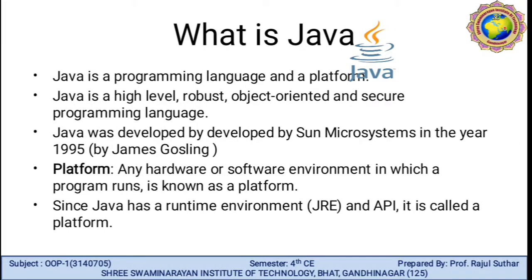What do you mean by Java? The definition of Java: Java is a programming language and platform. Java is a high-level, robust, object-oriented and secure programming language. Object-oriented programming gives the combination of objects or data rather than procedures. Programs are divided into objects. Data is designed such that it stores the information required for an object in the variables of the object. Java was first developed by Sun Microsystems in the year 1995 by James Gosling.